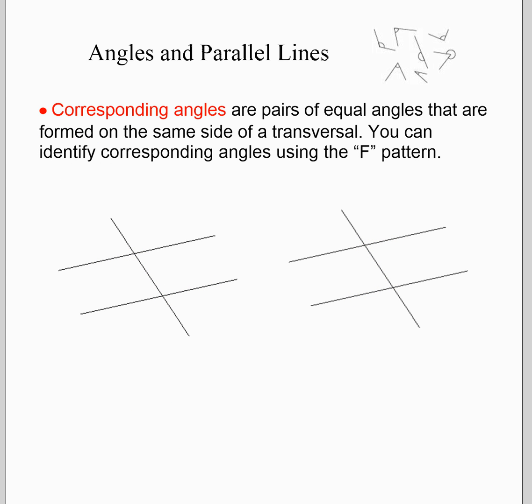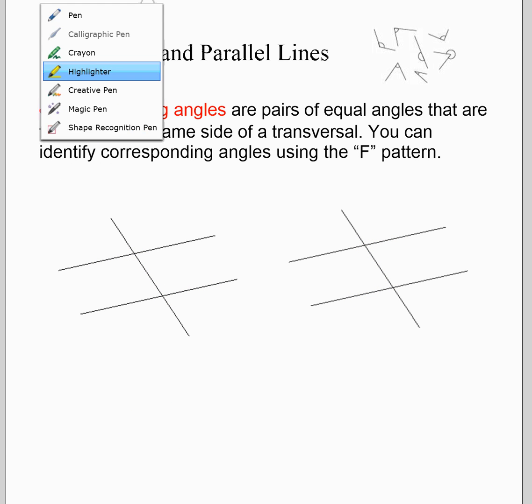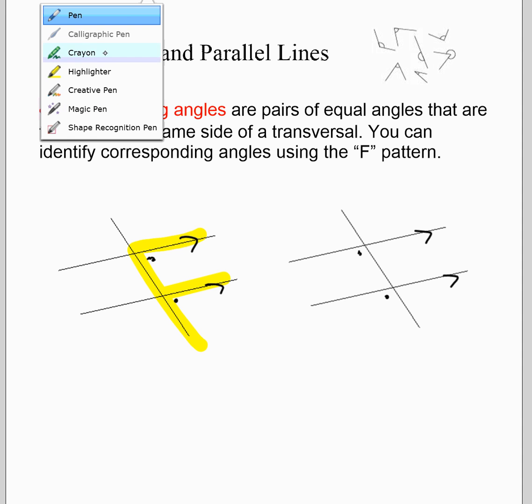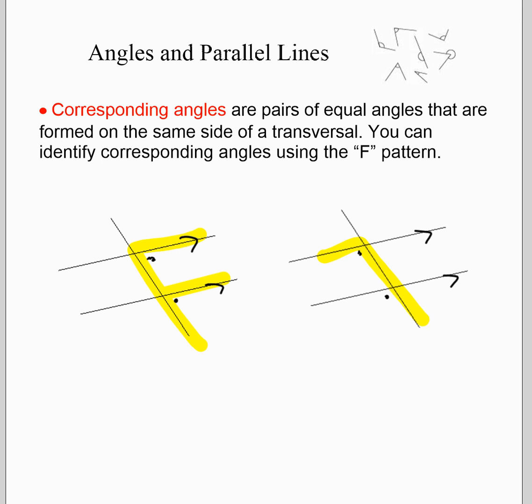Corresponding angles are on the same side of a transversal. They are also equal. So again, if that was my parallel line, my corresponding angles would be there and there. Again, I'll show with a highlighter right there. The letter F helps you to identify corresponding angles, so we call it the F pattern.